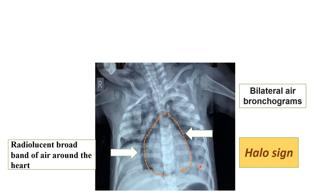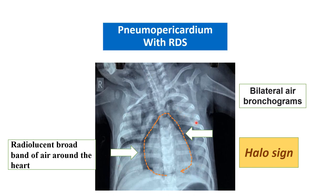This child was also having respiratory distress syndrome, so bilateral air bronchogram is present. The diagnosis for this x-ray is pneumopericardium with respiratory distress syndrome.